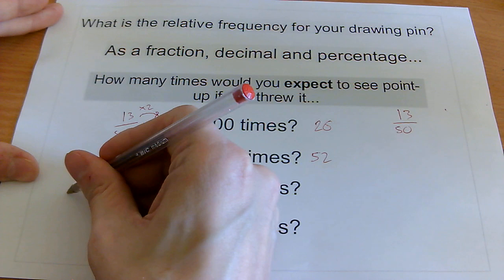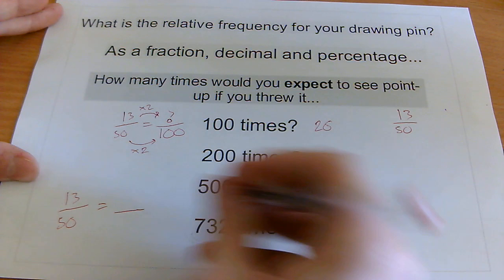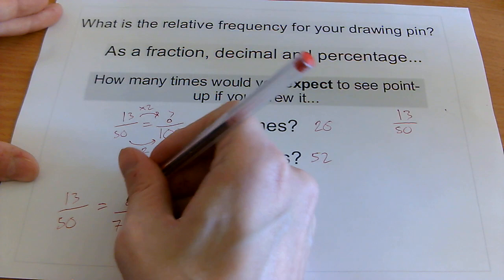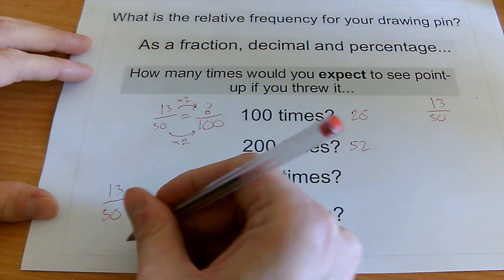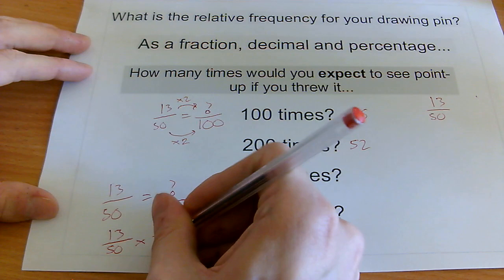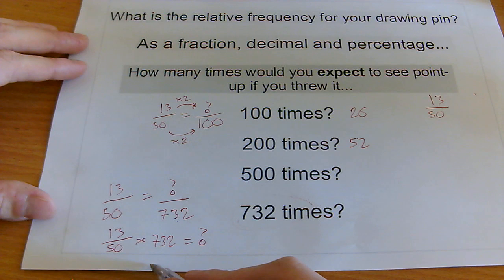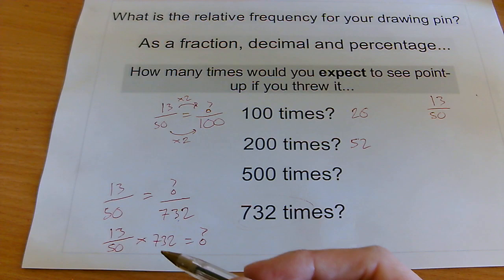But if we set the same sort of equation up, if I know that it happened 13 out of 50 times, I just want to know how many times out of 732 it would happen. Well, if I'm trying to work out this unknown term here, what I've really got to do is multiply this by 732. So if I do that, I end up with this calculation here. Now, I'll give my calculator out to actually do that, and that is exactly what I'm going to do.